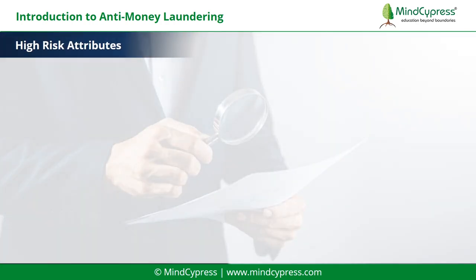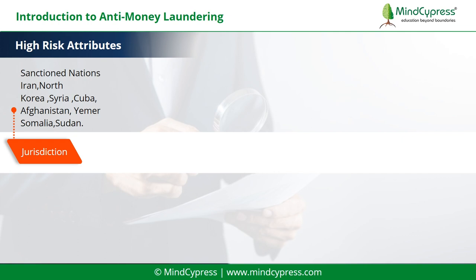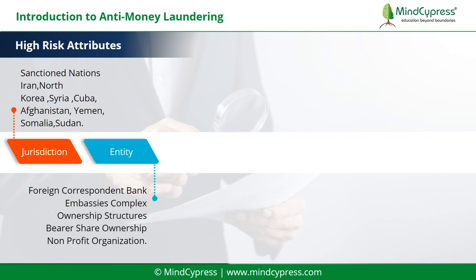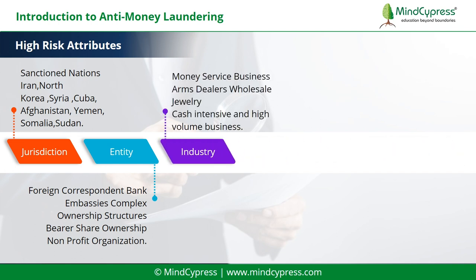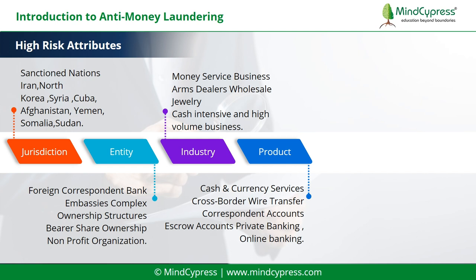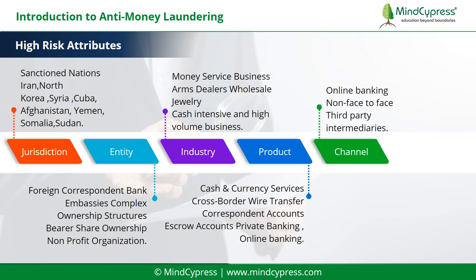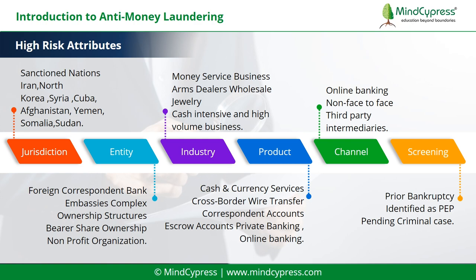Let's understand examples of high-risk attributes. Jurisdiction: sanctioned nations — Iran, North Korea, Syria, Cuba, Afghanistan, Yemen, Somalia, Sudan. Entity: foreign correspondent bank, embassies, complex ownership structures, bearer share ownership, non-profit organizations. Industry: money service business, arms dealers, wholesale jewelry, cash-intensive and high-volume businesses. Product: cash and currency services, cross-border wire transfer, correspondent accounts, escrow accounts, private banking, online banking. Channel: online banking, non-face-to-face, third-party intermediaries. Screening: prior bankruptcy, identified as PEP, pending criminal case.